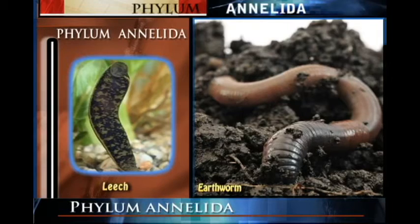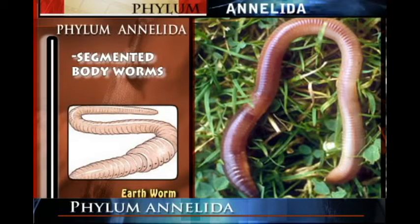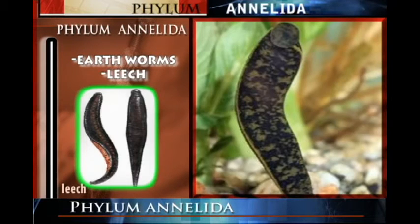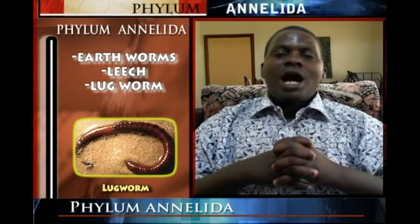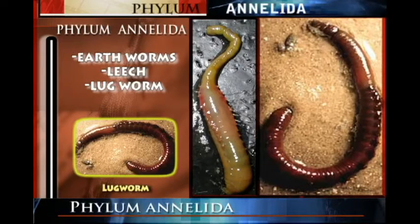Phylum Annelida contains organisms with segmented bodies. Examples we find in this phylum include the earthworm, the leech, and the ragworm. These organisms share similar characteristics which are what we want to discuss today.